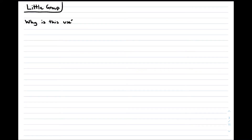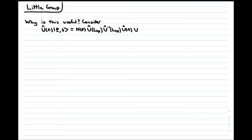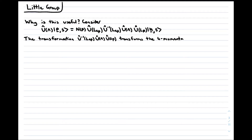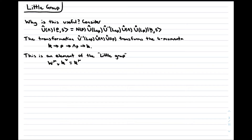Why is this approach of describing everything relative to the rest frame of the particle useful? It's useful because of the existence of the little group and the concept of induced representations. To understand these concepts, consider a Lorentz transformation acting on a momentum eigenstate. If we write the momentum eigenstate relative to the rest frame and insert a factor of the identity, we can write the Lorentz-transformed state as a standard boost to Λp combined with an element of the little group. The little group is the subgroup of all Lorentz transformations that leaves the standard four-momentum invariant. In the rest frame of a particle, it is the set of rotations SO(3) that leaves the four-momentum invariant. Since we are leaving open the possibility of a projective representation, the Wigner matrix is an element of SU(2).